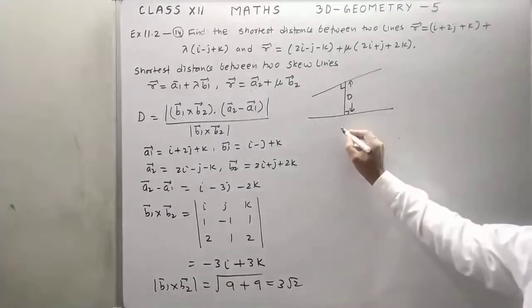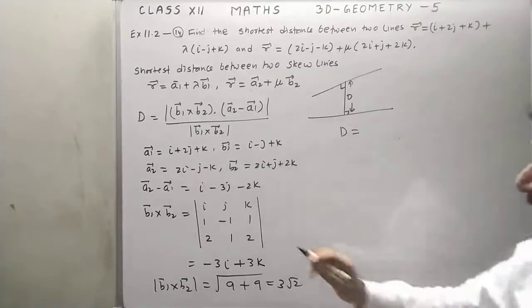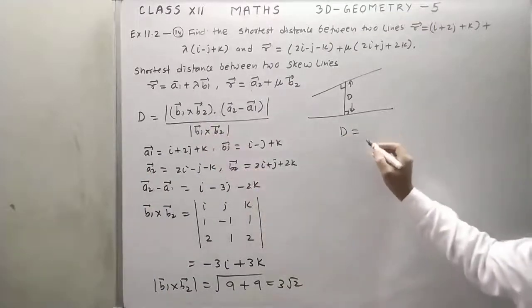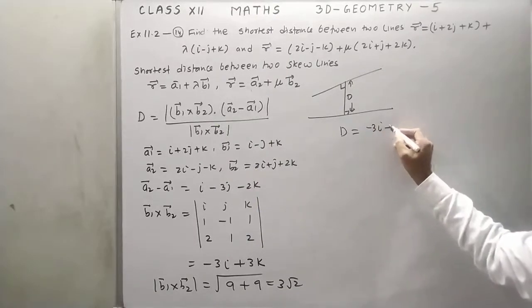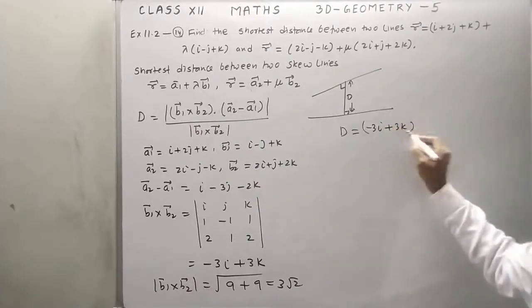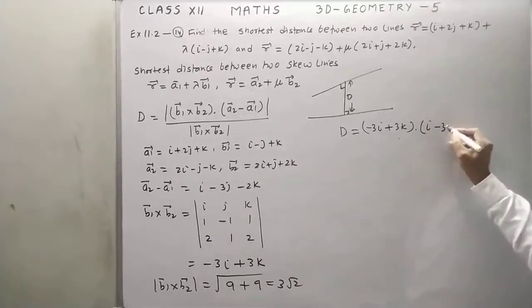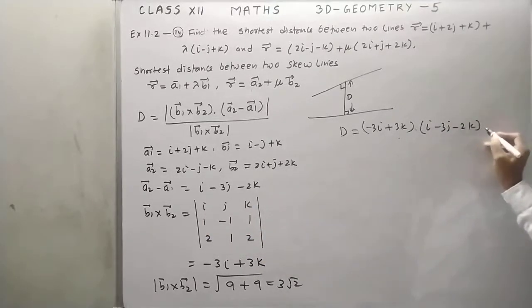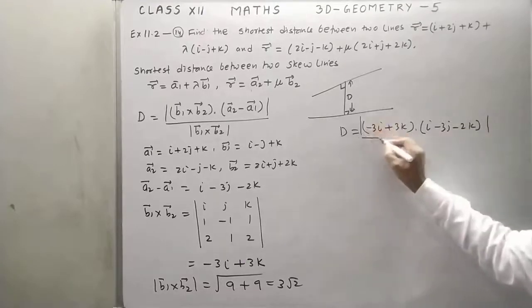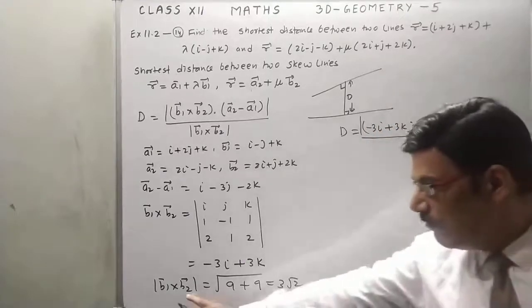Now we will use the formula. Distance between two skew lines: b1 cross b2, minus 3i plus 3k, dot a2 minus a1, that is i minus 3j minus 2k, upon magnitude of b1 cross b2, that is already found, 3 root 2.